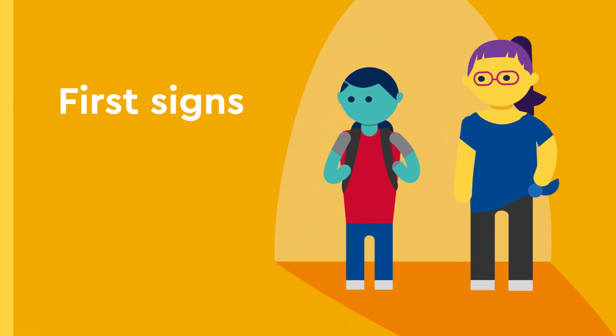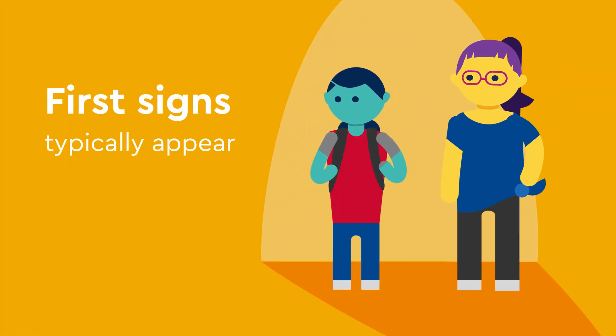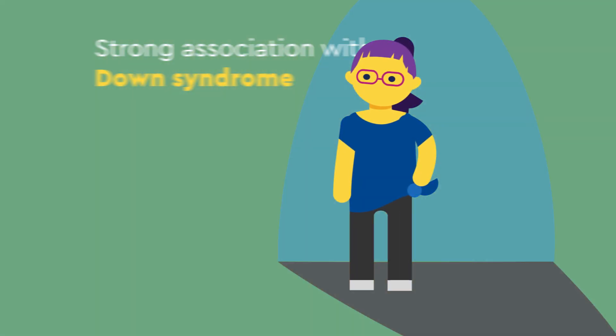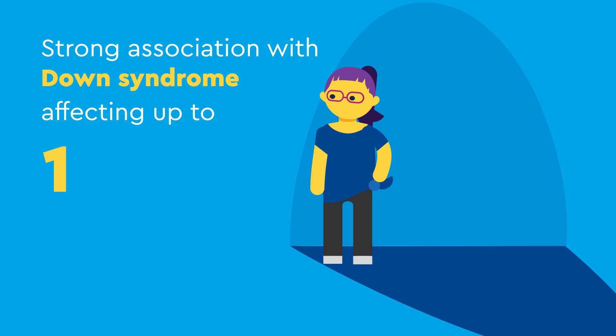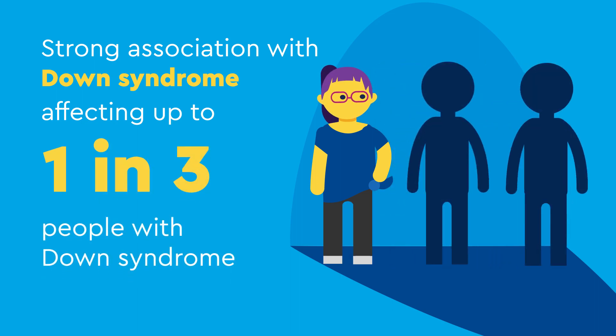The first signs of keratoconus typically appear in your preteen or teenage years. This disease has a strong association with Down syndrome, affecting up to one in every three people with Down syndrome.